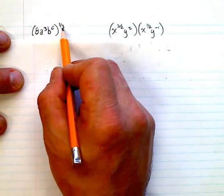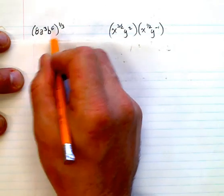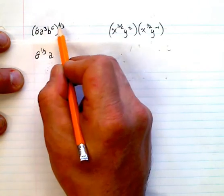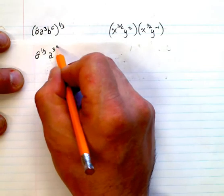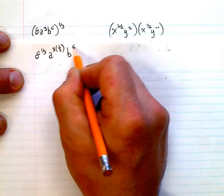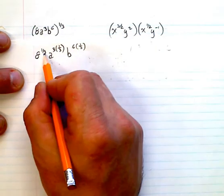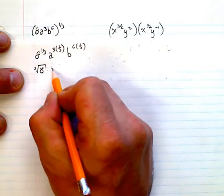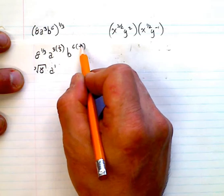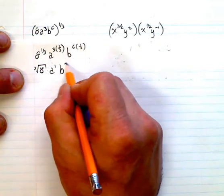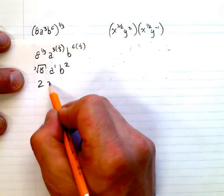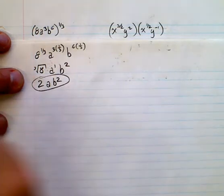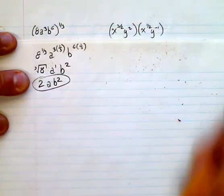This is like the cube root, so it's the 1 third power on everything. It's going to be 8 to the power of 1 third times A to the power of 3 times 1 third times B to the power of 6 times 1 third. The cube root of 8 is 2. 3 times 1 third is just A to the power of 1. 6 times 1 third is 2, so it's B squared. This gives us 2AB squared.